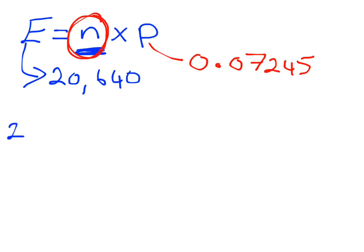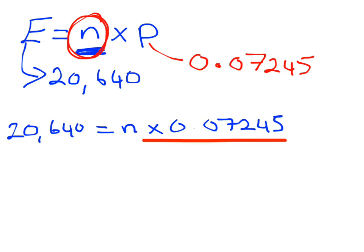That's going to give us 20,640 equals N times 0.07245. Now the opposite of multiplying by 0.07245 is dividing by that number. So we are going to divide both sides by 0.07245.